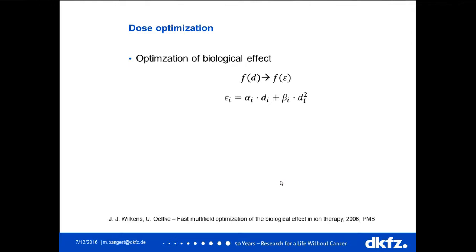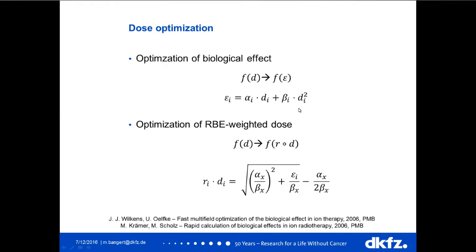For biological optimization, following the work of Wilkens and Oelfke, we make a transition from an objective function that depends on dose to one that depends on the effect, which introduces a quadratic term in dose. When optimizing the RBE weighted dose, the translation from dose to RBE times dose introduces additional non-linearities that must be accounted for during the derivative and objective function and gradient calculations.